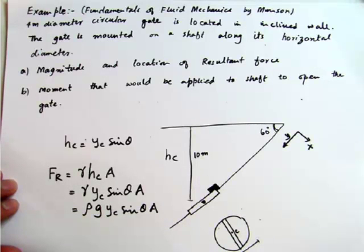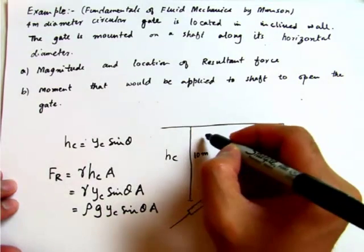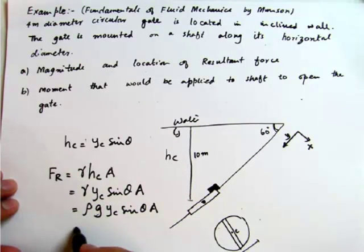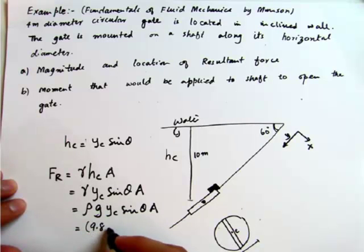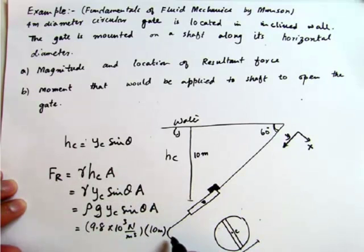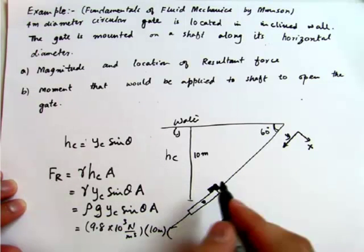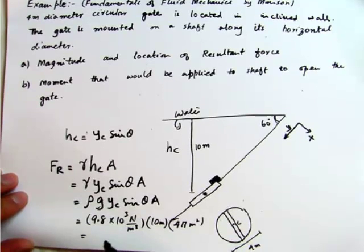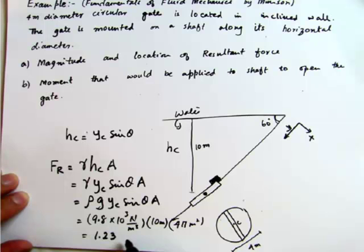All those expressions are equivalent. Using water density, F_R equals 10³ N/m³ times H_C (10 meters) times the area pi·d²/4 equals 4·pi square meters. Multiplying these together gives F_R equals 1.23 mega-newtons, i.e., 1.23 × 10⁶ N. That is the force exerted by the water on the gate.